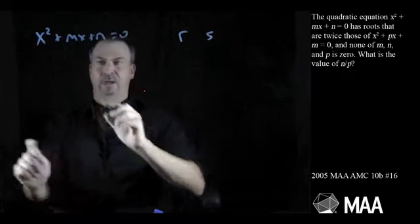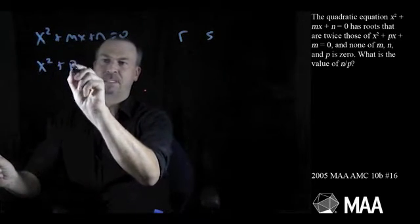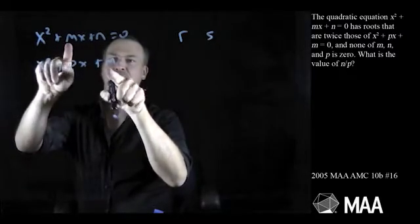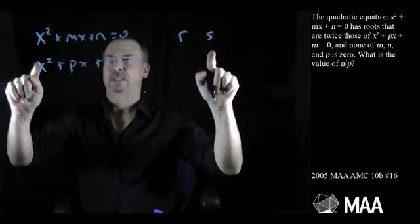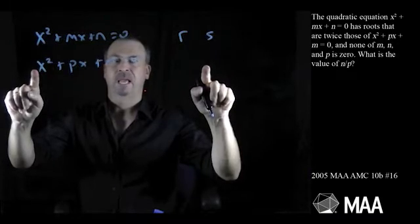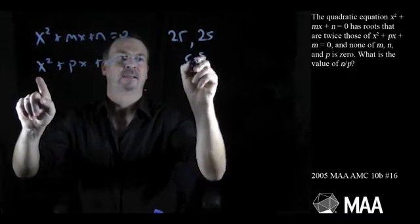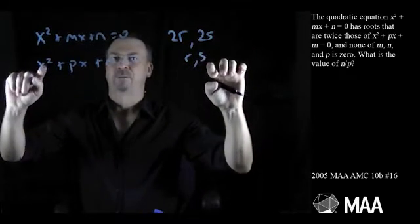Those roots are double the roots of x²+px+m. So let me write this: the first equation has roots 2r and 2s, and the second has roots r and s. These roots are double the roots of that one.